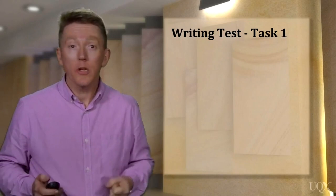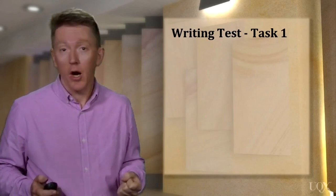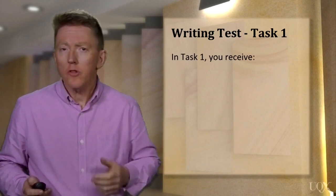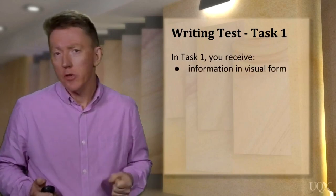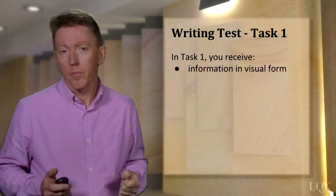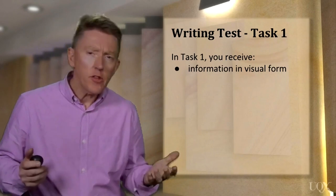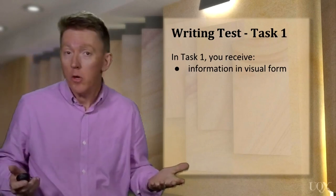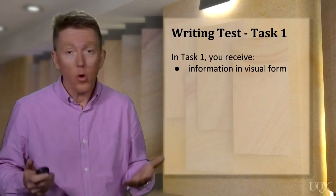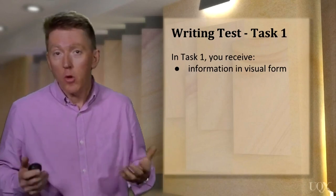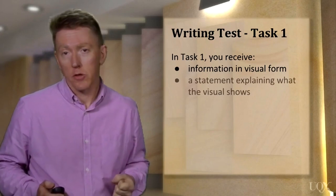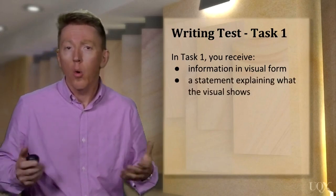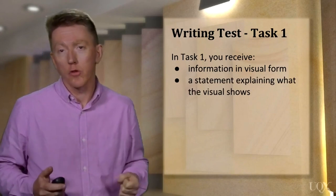So what can you expect in task 1 of the IELTS Academic Writing Test? You will receive some information in visual form. This information could be in the form of a graph, a table, a diagram, or even a map. You will also receive a statement explaining what the visual represents, or what it shows.